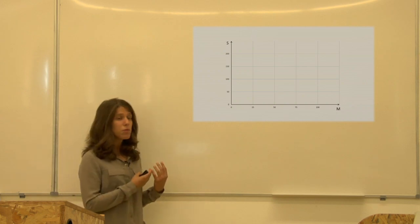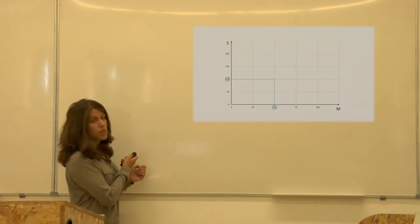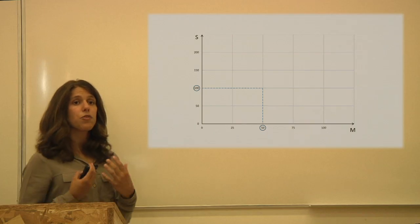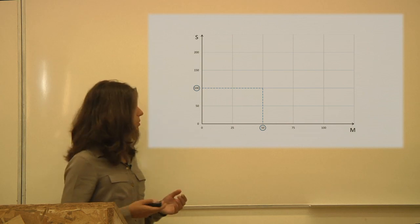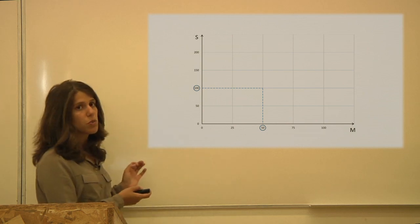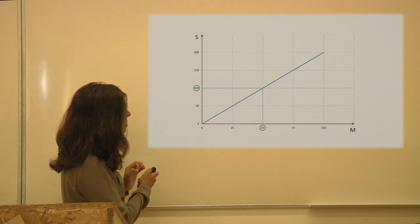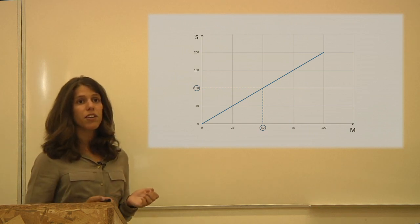Like in the example before, if I spend 50 euros in marketing I get 100 euros in sales. And for this example let's assume that if we do not spend anything in marketing then we do not receive any euro in sales. Therefore, connecting the two dots we get this linear function.